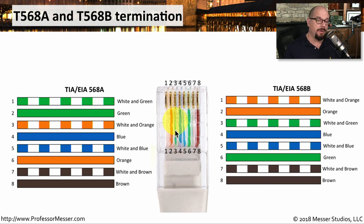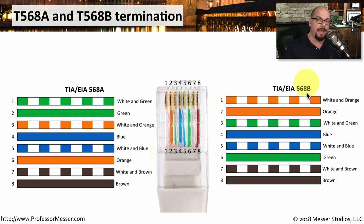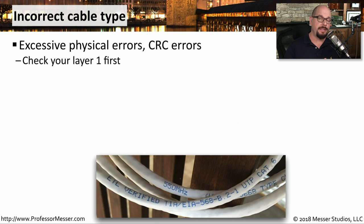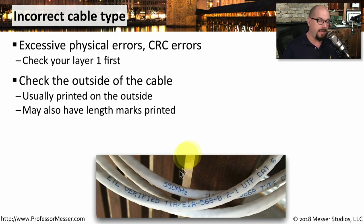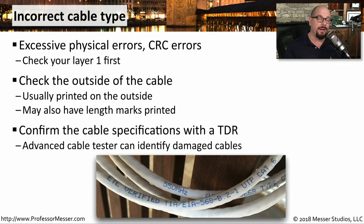Sometimes you can look at the bottom of an ethernet connector to see exactly what standard is being used, numbering the pins 1 through 8 from left to right. If you look at the statistics for your ethernet interface and you notice a lot of physical errors or CRC errors, you may want to check and make sure that you're using the right kind of cable. One way to tell is to simply look at the outside of the cable — usually there will be information printed onto the sheath itself. You might also want to get a TDR and run your own tests to make sure the specifications match what you're seeing on the outside of the cable.